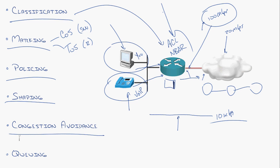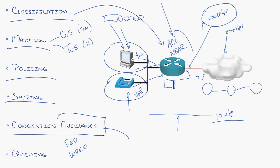Congestion avoidance tools are awesome. Things like random early detection or weighted random early detection work like a sniper. TCP traffic builds itself up — with TCP windowing, a connection starts small and ramps up, trying to consume as much bandwidth as possible. Congestion avoidance gets ahead of this: as traffic builds to a certain threshold, the router starts dropping random packets in that stream. As soon as TCP detects dropped packets, it shrinks the window size and slows down automatically, before consuming all available bandwidth.